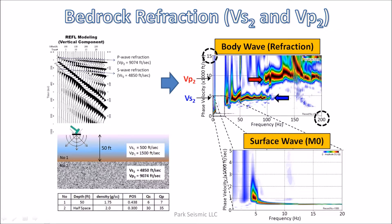These two sloping lines are theoretically calculated arrival times for P and S wave refractions from bedrock. We can clearly identify the first arrivals appearing along the P wave refraction line, and we have a weak clue for the S wave refraction arrivals appearing along the calculated line. Both types of P and S wave refractions occur from the bedrock and can repeat at later times because of multiple refractions within the soil, contributing more energy to the horizontal energy trends in the dispersion image.